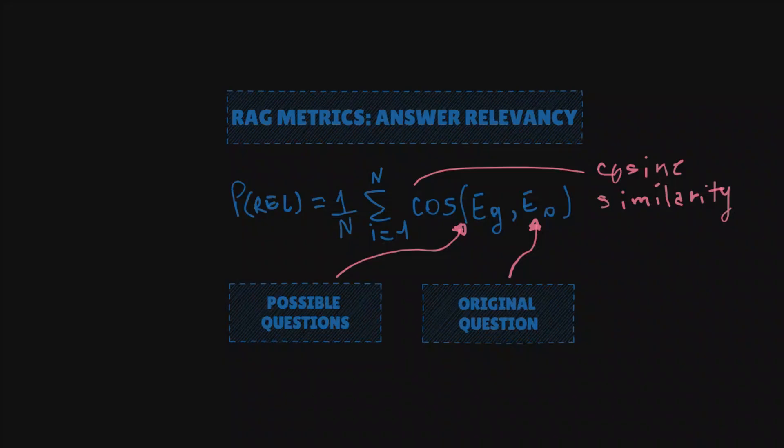First we have something called cosine similarity that is basically a metric to measure how similar two things are in a vector space. In this case, we're gonna measure how the question is similar to the answer that is being retrieved by the RAG.